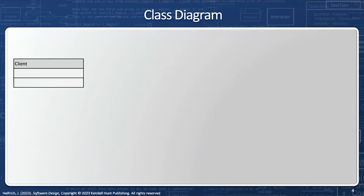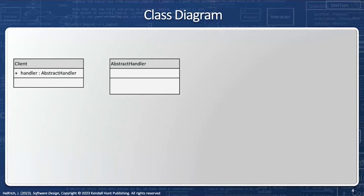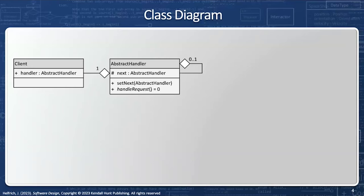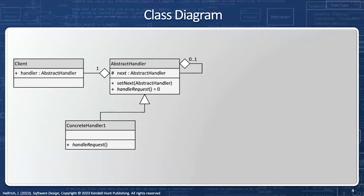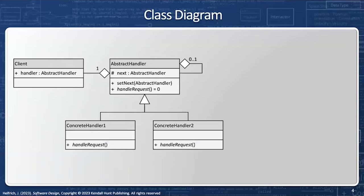Let's take a look at the class diagram. We're going to start with the client, and the client is going to have a handler reference, so we have to have the abstract handler. The client is related to the abstract handler through association — exactly one. The abstract handler will have a pointer to the next abstract handler, and this is how we implement the linked list: zero if this is the end node, and one if there's a node after us. We're going to have a set_next so we can add a new element to the linked list, and we're going to have the handle_request. Notice handle_request is a pure virtual function, which means the abstract handler is an abstract class. Since we have a pure virtual function, we must have at least one derived class — in this case, concrete handler one and concrete handler two.